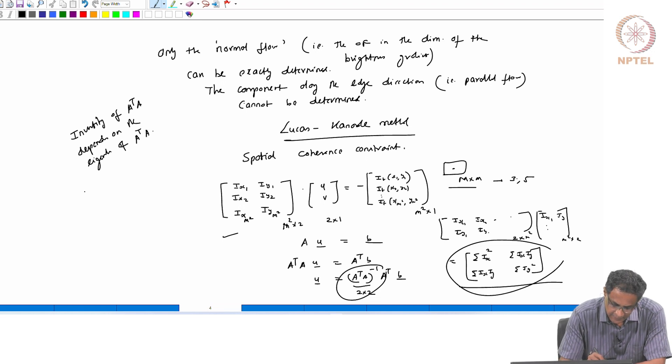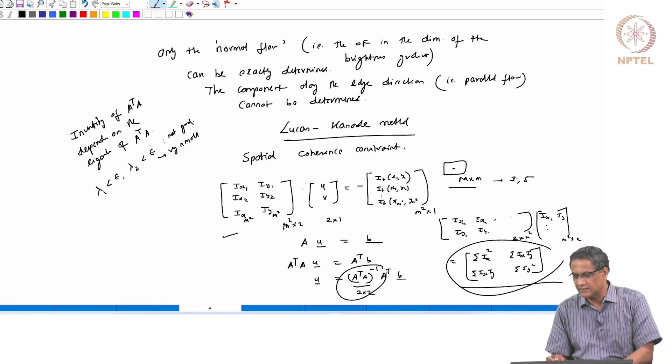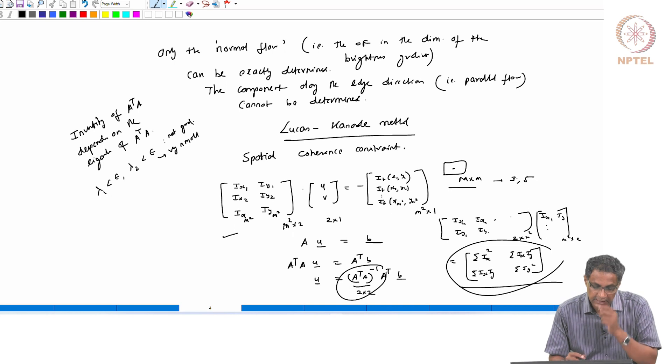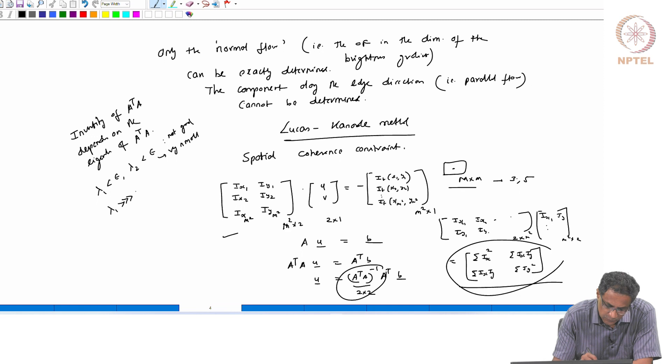So, lambda 1, lambda 2. Let's say 2 small, I mean lambda 1 some less than less than some epsilon, lambda 2 less than epsilon, epsilon very small. Not good. What this means is that the variance is probably coming because of some noise and not really because of some actual motion. Then, lambda 1 much, much greater than lambda 2. Not good either.